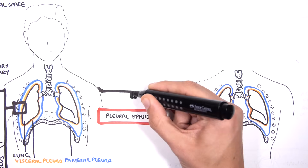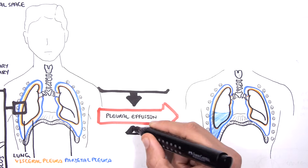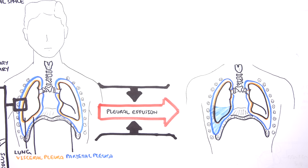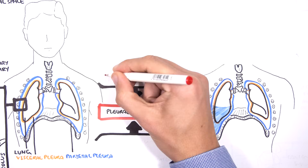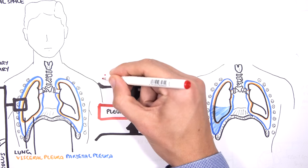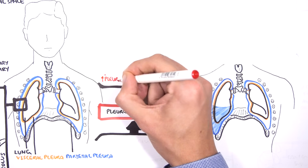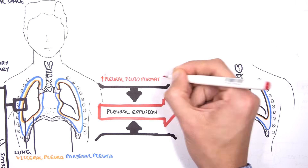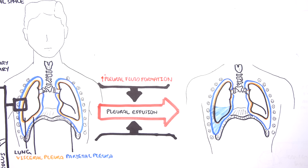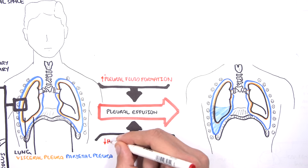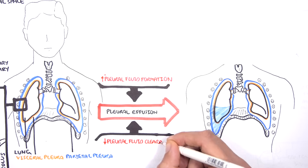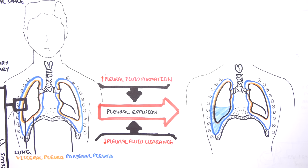There are two main mechanisms for developing pleural effusions. The first is where you have too much pleural fluid forming in the pleural space. And the second mechanism is where you have a decrease in pleural fluid clearance from the pleural space.